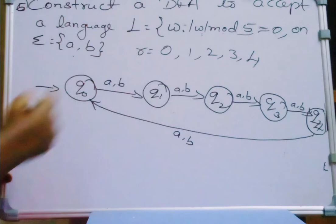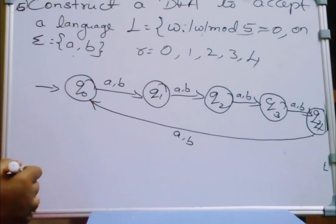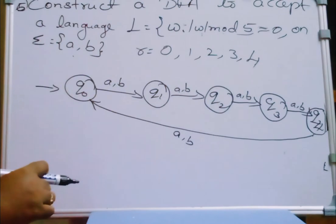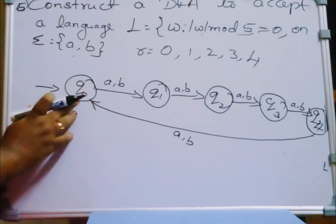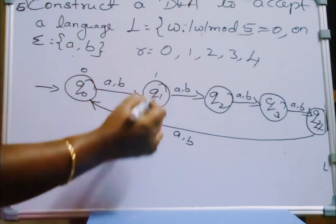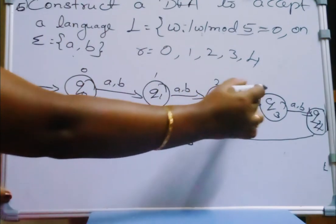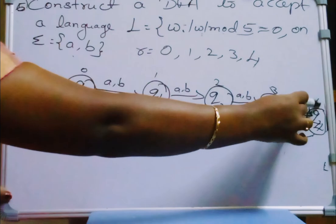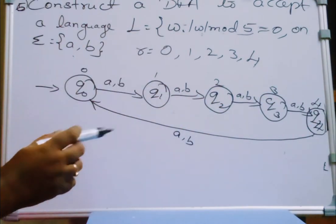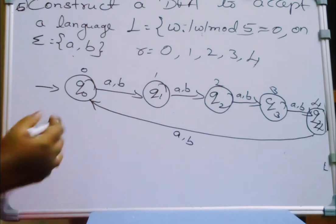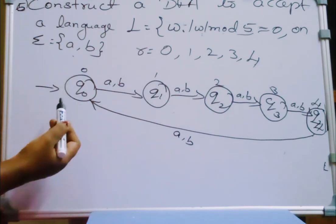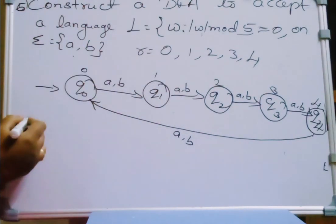Here W mod 5 is equal to 0, so we need to identify our final state. In which state is the remainder 0? Q0 will always hold remainder 0, Q1 will have remainder 1, Q2 remainder 2, Q3 remainder 3, and Q4 has 4 mod 5 which is 4. So which will be the final state where W mod 5 equals 0?